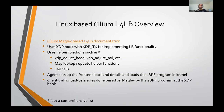For load balancing traffic between back-ends, Cilium uses the Maglev hashing algorithm. Maglev is a consistent hashing algorithm which ensures that if one of the LB nodes goes down, the other LB nodes will also choose the same back-end for that five-tuple traffic.